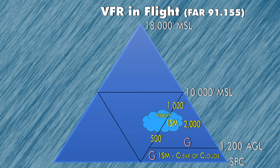The middle triangle has a few airspaces: Class Bravo, Charlie, Delta, and Echo. In order for you to be VFR in those airspaces, you need to have at least three statute miles of visibility. You have to be 1,000 feet above, 500 feet below, and 2,000 feet horizontally away from clouds. Class Bravo airspace is special because you have to be clear of clouds — so in Class Bravo, you need three miles of visibility and you have to stay out of the clouds.